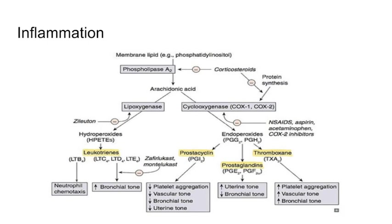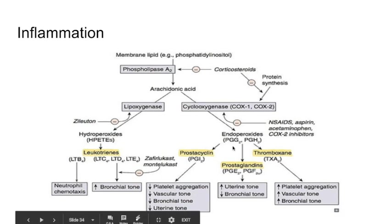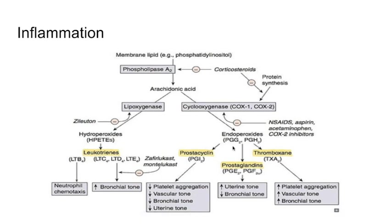The second goal is to decrease inflammation. Inflammation starts from membrane lipids attacked by neutrophils, leading to phospholipase A2, which degrades membrane lipids to arachidonic acid. Arachidonic acid then follows either the leukotriene pathway or the prostaglandin pathway. To decrease inflammation in asthma, you can block phospholipase A2 using corticosteroids, or you can block leukotrienes using leukotriene antagonists.